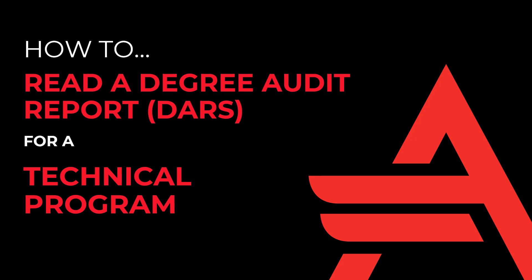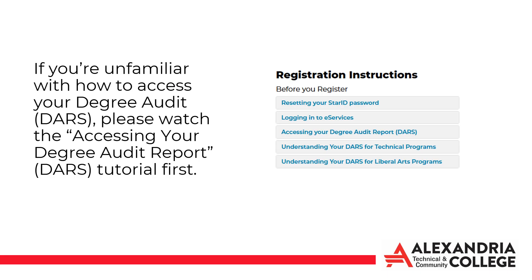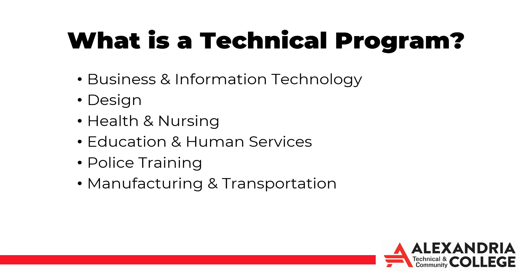Welcome to the Alexandria Technical and Community College How to Read a Degree Audit Report, or DARS, for a Technical Program Tutorial. If you're unfamiliar with how to access your Degree Audit or DARS, please watch the Accessing Your Degree Audit Report tutorial first. This can be found at alextech.edu/rad.